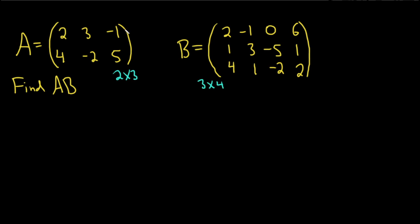So again, A has two rows and three columns — 2 by 3. B has three rows and four columns — 3 by 4. These numbers are called the dimensions of the matrices. Because the inner numbers match, we're allowed to multiply, and the resulting matrix will have the dimensions of the outer numbers. If the inner numbers don't match, you cannot perform the multiplication. The answer will be a 2 by 4 matrix.